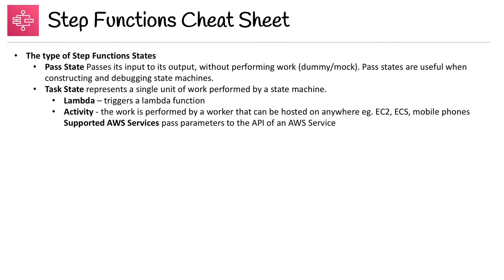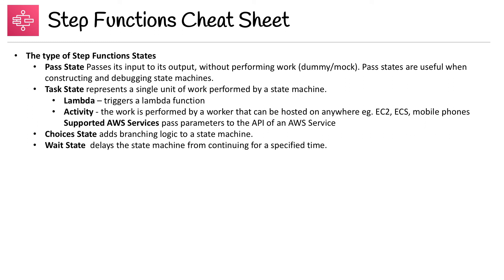For Task states, work can be performed by an activity hosted anywhere — such as EC2, ECS, or mobile phones — or by supported AWS services, where you pass parameters to an API and the service takes care of the task. Choice states add branching logic to a state machine. The Wait state delays the state machine from continuing for a specified time.